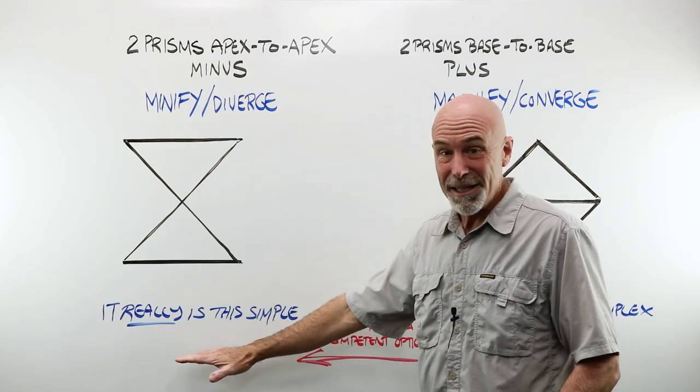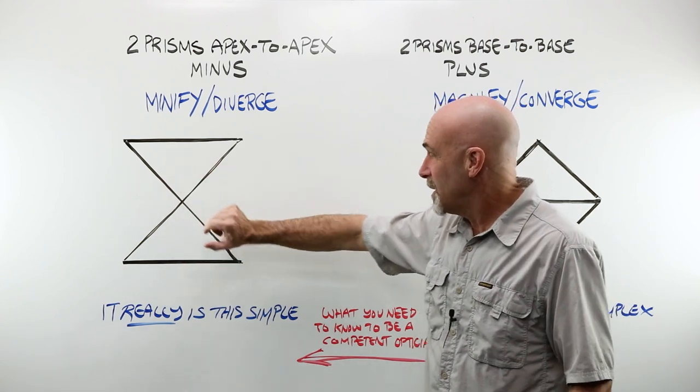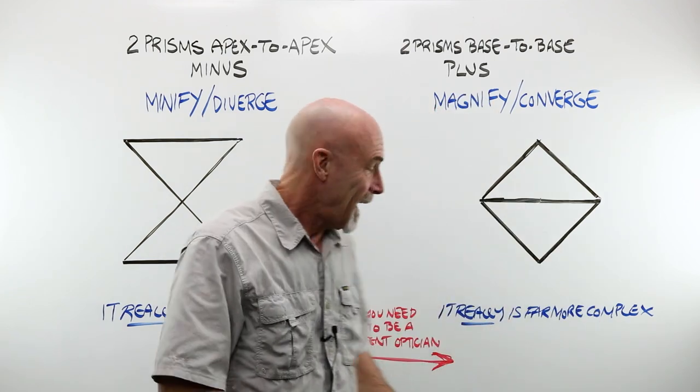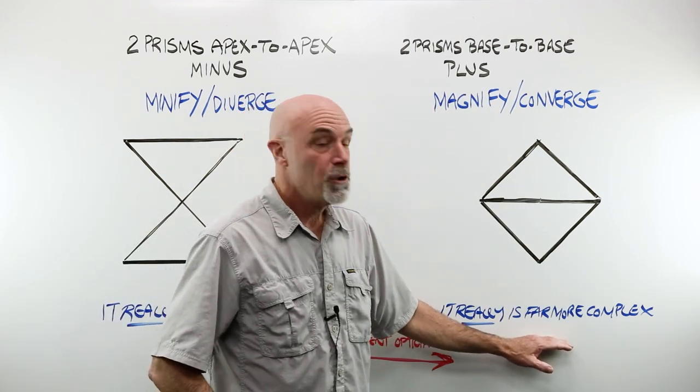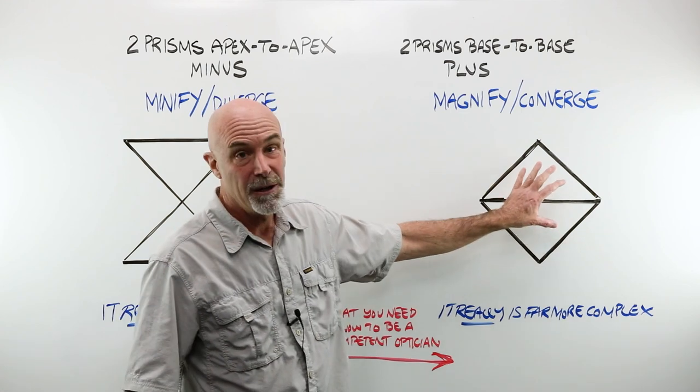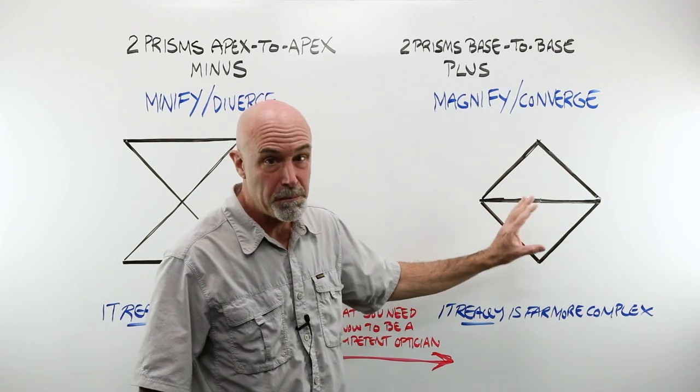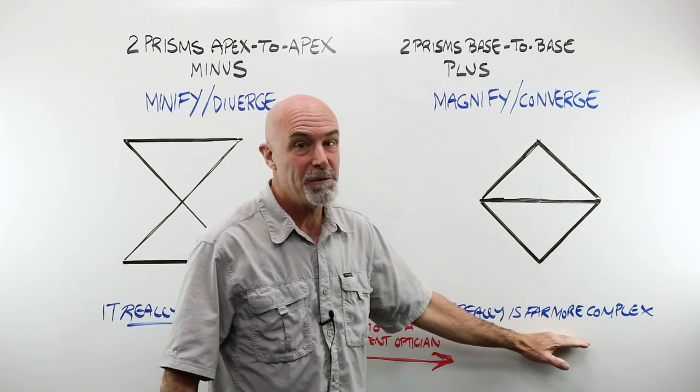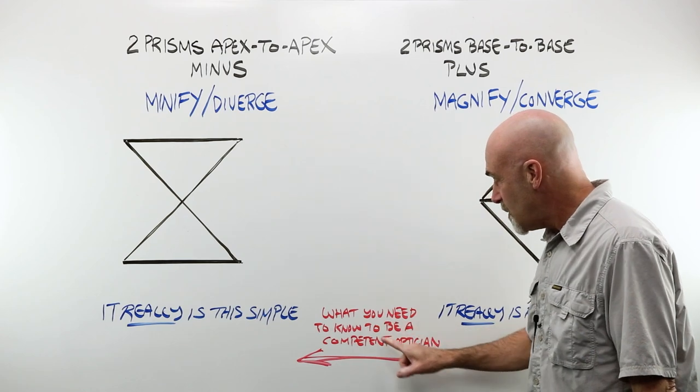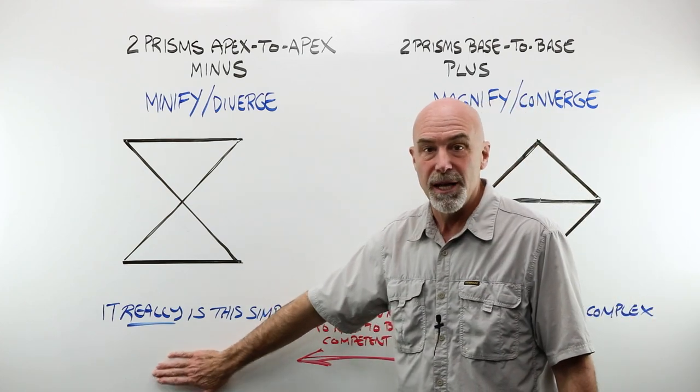It really is this simple. You'll see as we start working some of the formulas and you start drawing out questions, it really is this simple. At the same time, it really is so much more, so much further complex than this. Once you get into curvature and lenses and thickness and material and power, again, we're not trying to be optical engineers. We're not trying to be physicists. What you need to know to be a competent optician falls in between these two, far closer to this end of things.